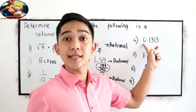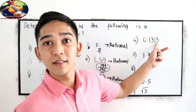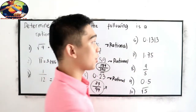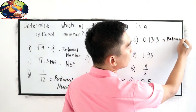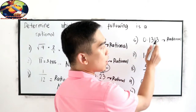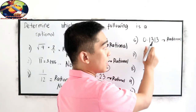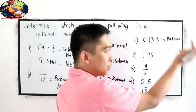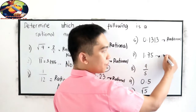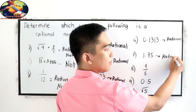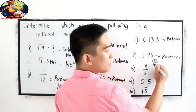Number 6: 0.1313. This is rational. We're going to discuss in our next videos how to write this decimal form into rational form. Number 7: 1.75. Rational — that is 175 over 100.